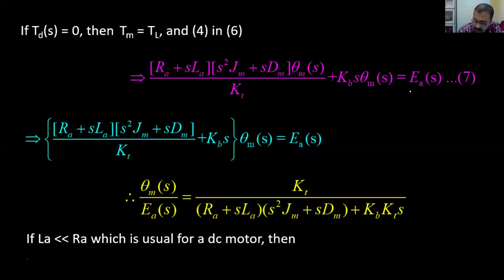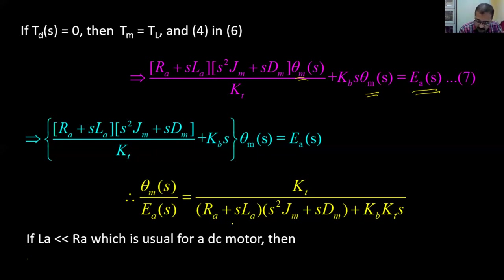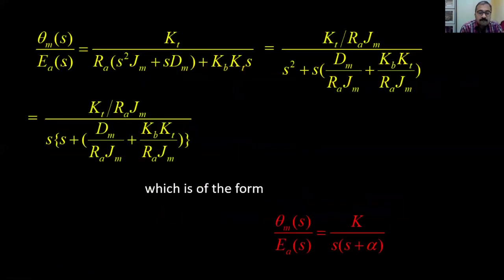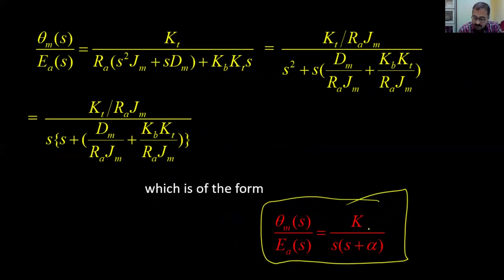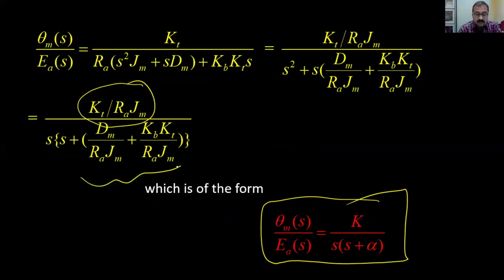Taking θm(s) common, we get: θm(s)/Ea(s) = Kt / [(Ra + s·La)(s²·Jm + s·dm) + Kb·Kt·s]. If La is much less than Ra, the inductance can be neglected, simplifying the expression. With further simplification this reduces to the form K / [s(s + α)], where K = Kt/(Ra·Jm) and α is a constant. In this way the transfer function for the electromechanical system is derived.